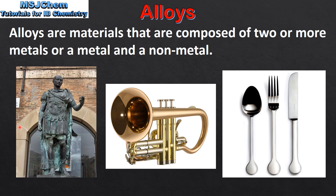Here we can see some examples of alloys. On the left we have a bronze statue, which is an alloy of copper and tin. In the middle we have a musical instrument made of brass, which is an alloy of copper and zinc. And on the right we have some cutlery made of stainless steel, which is an alloy of iron, nickel and chromium.